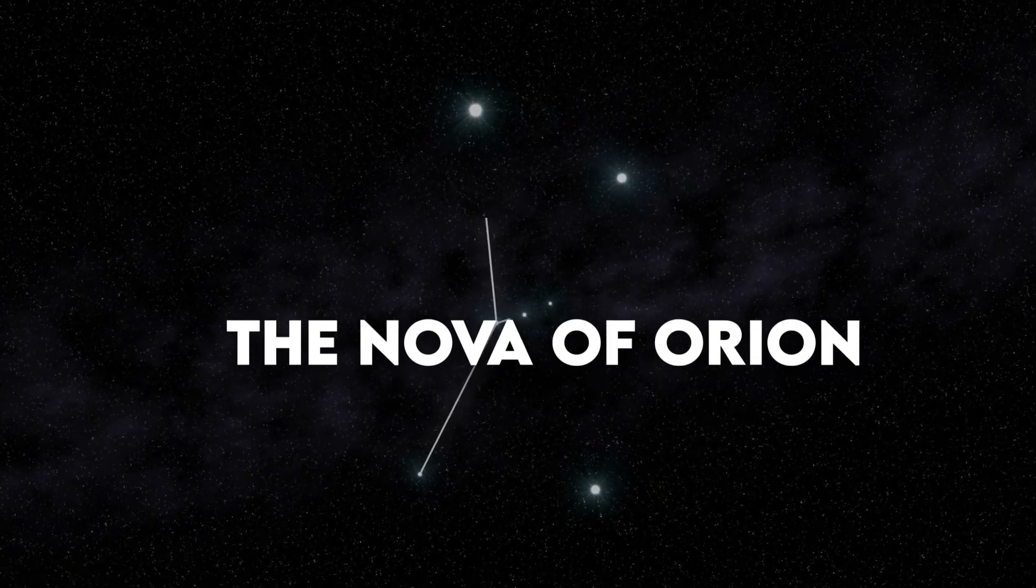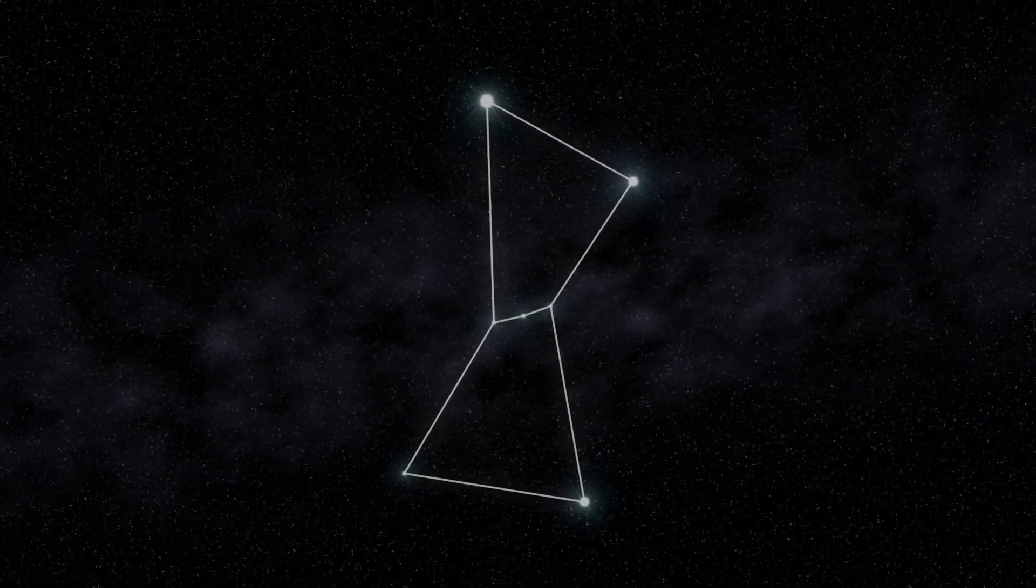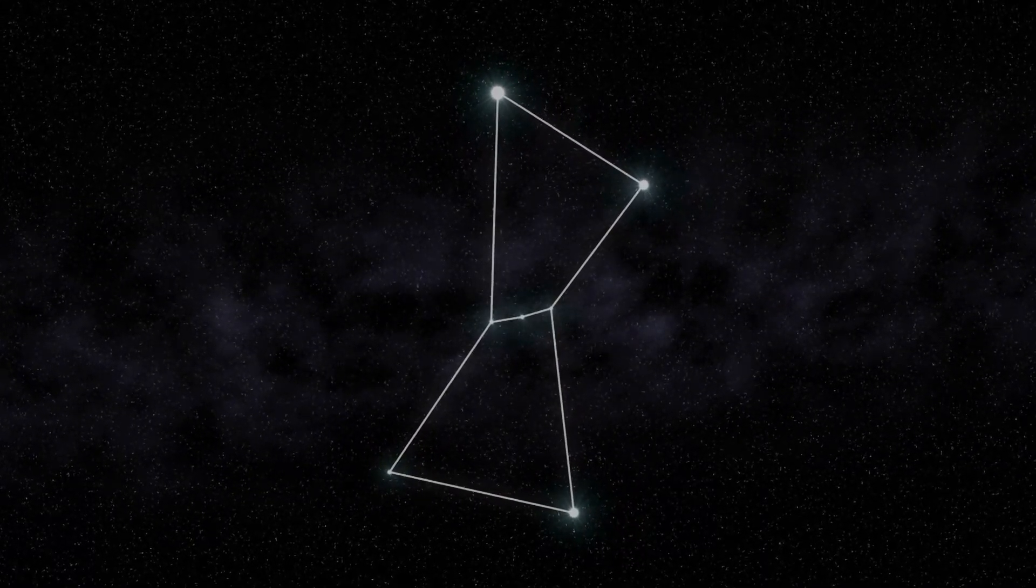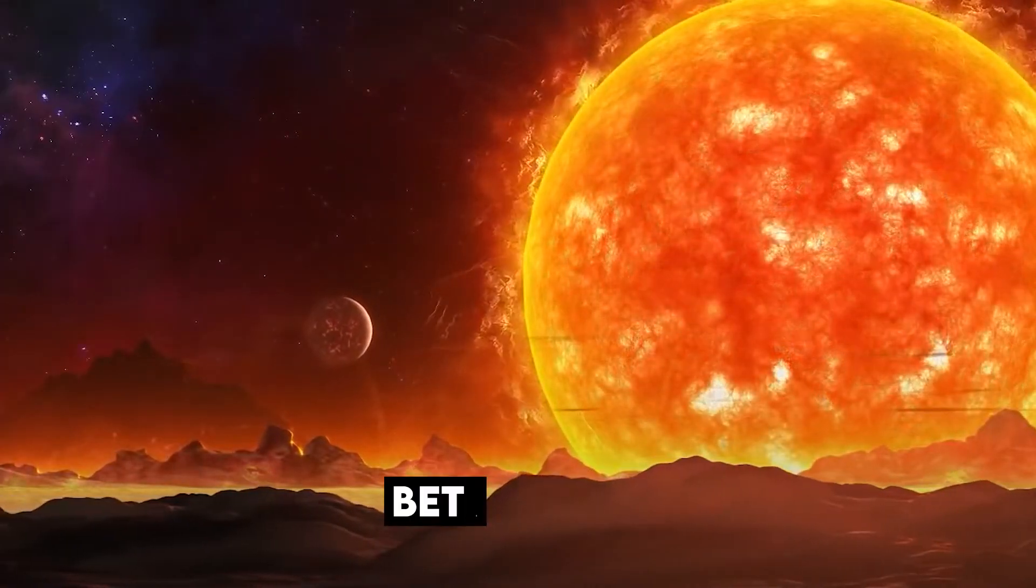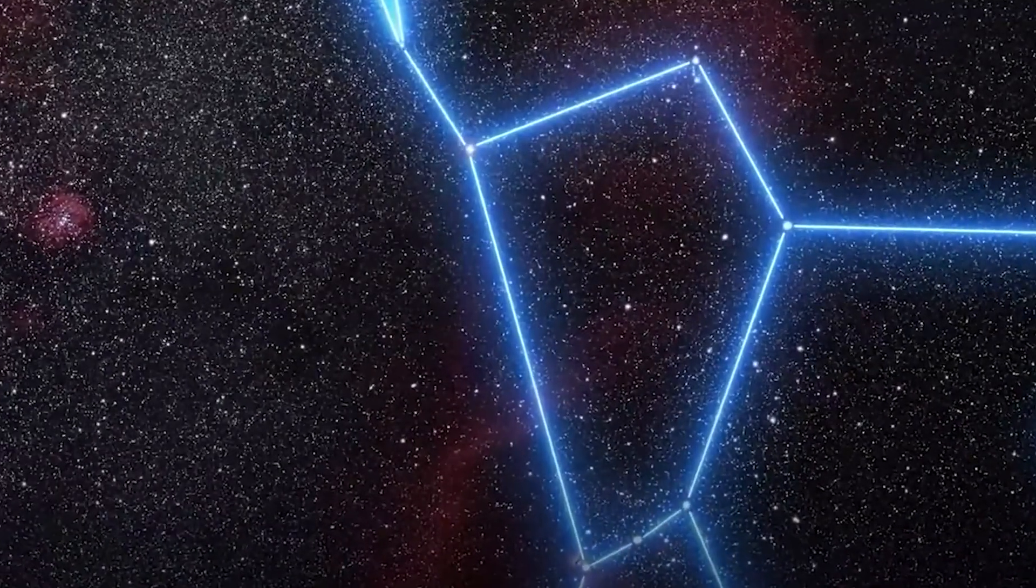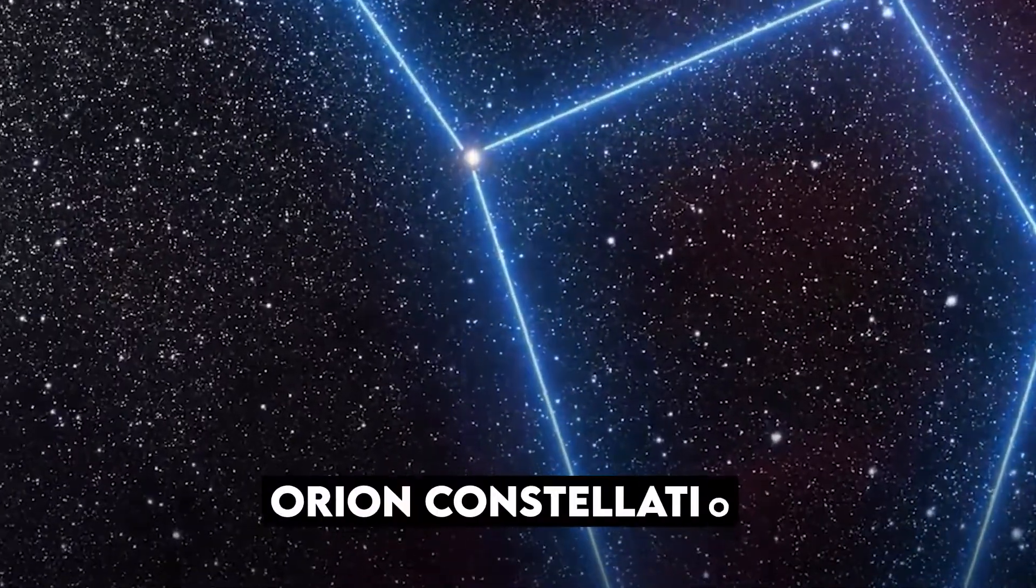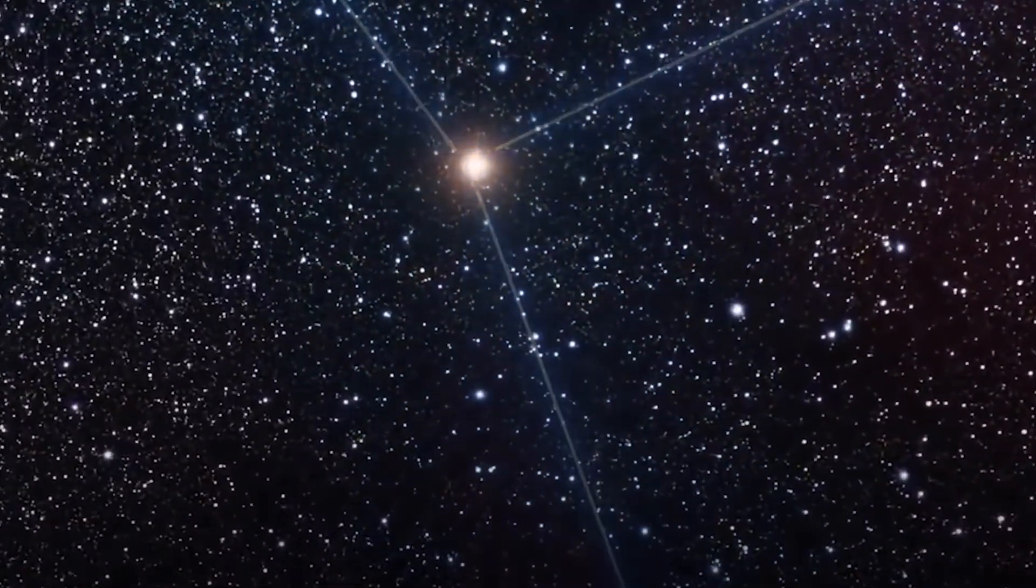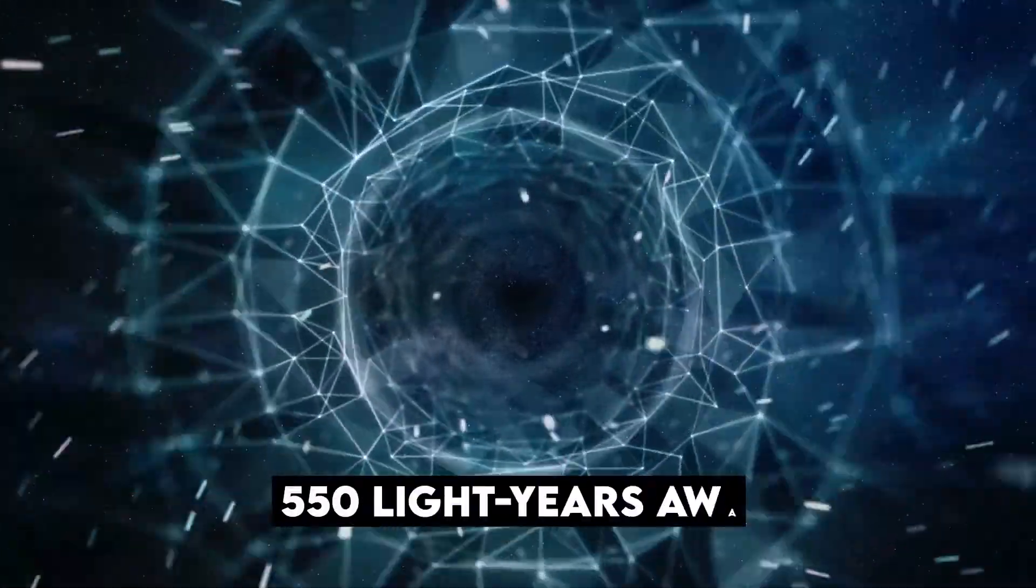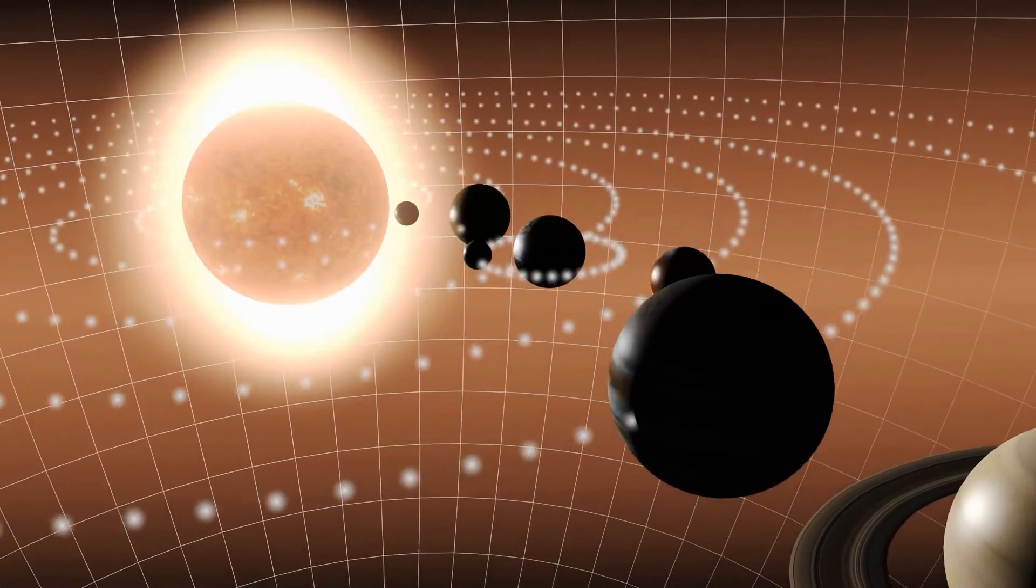The Nova of Orion. Among the supernovae, there is one that received a lot of attention in the media. Yes, we are talking about Betelgeuse. Betelgeuse is a red supergiant star in the Orion constellation that is nearing the end of its life and is about 550 light-years away from our solar system.